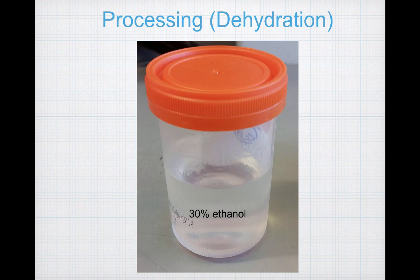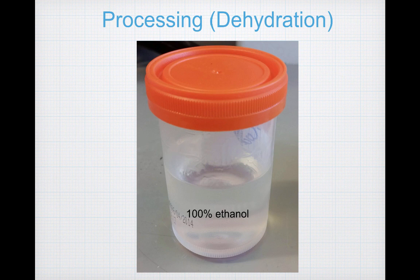After fixation comes the processing. Processing starts with dehydrating your tissue, and it is important to remember that you have to dehydrate the tissue slowly to maintain the morphology of the tissue structure. To start, you'll immerse your tissue in a solution of 30% ethanol. This causes the water in the tissue to start to diffuse into the ethanol-water mixture due to a concentration gradient. Then you'll immerse the tissue in 50%, then 70%, 80%, 95%, and finally 100% ethanol.